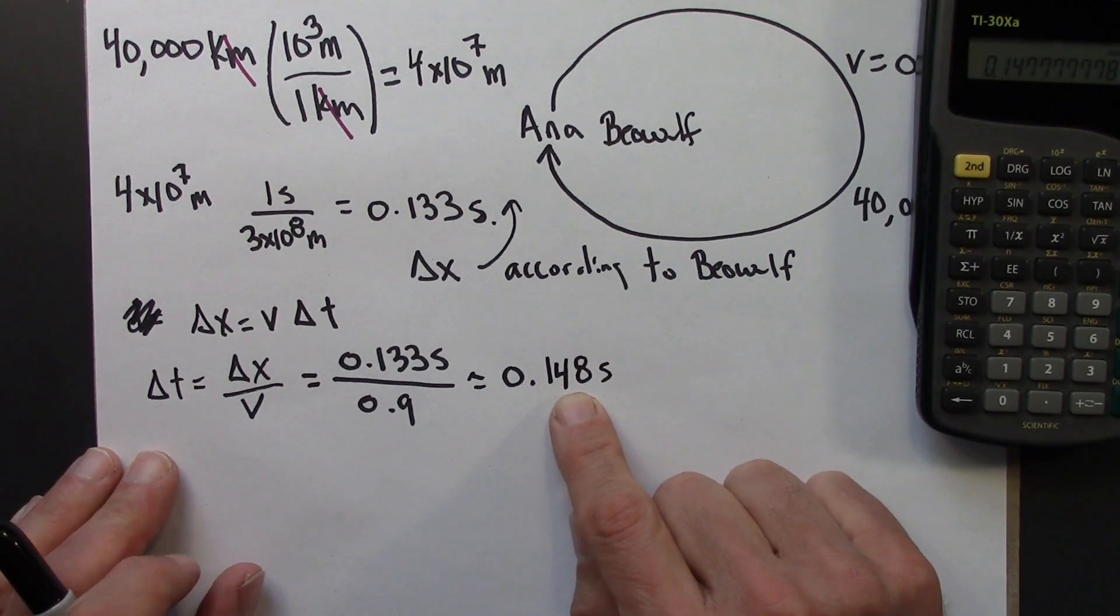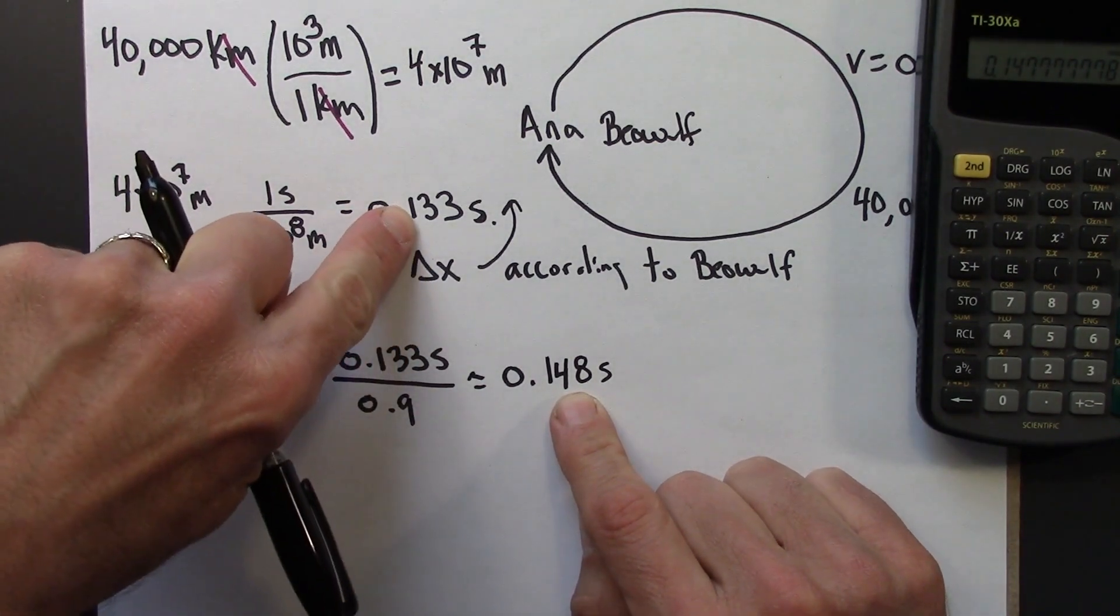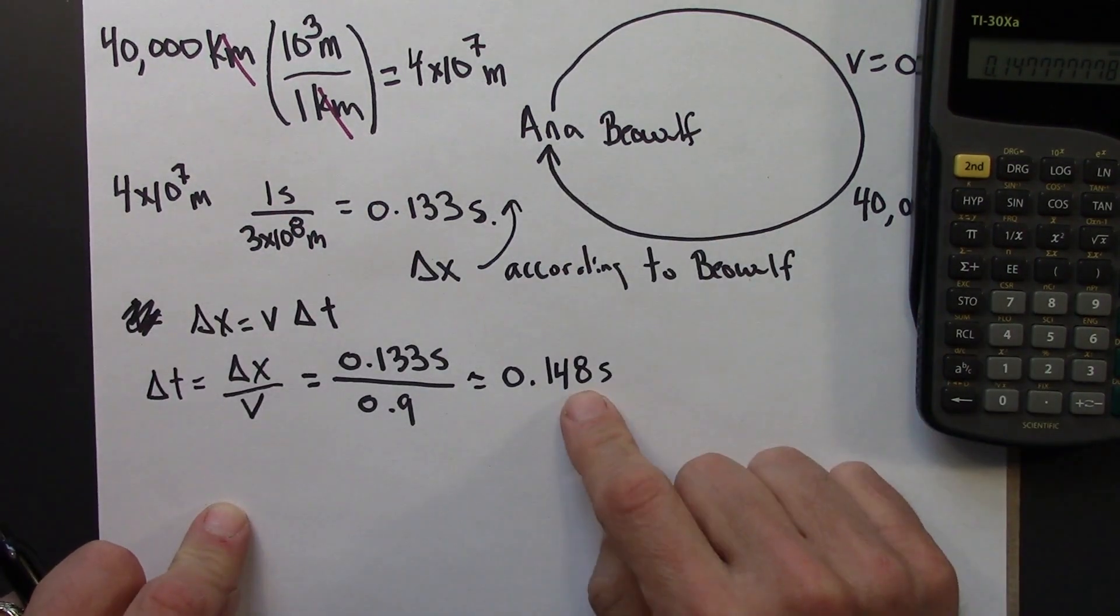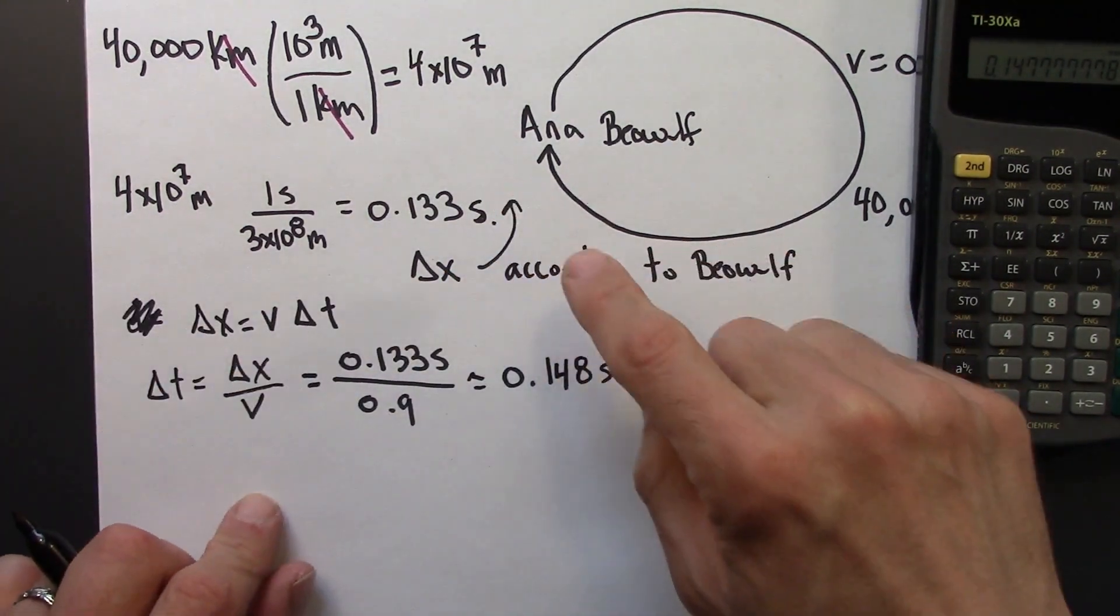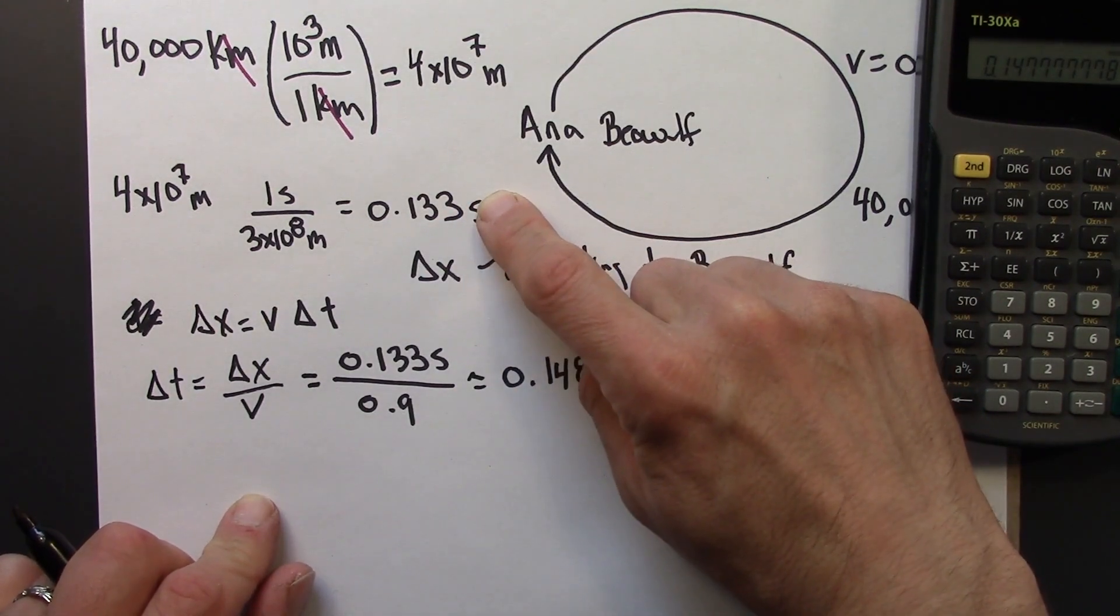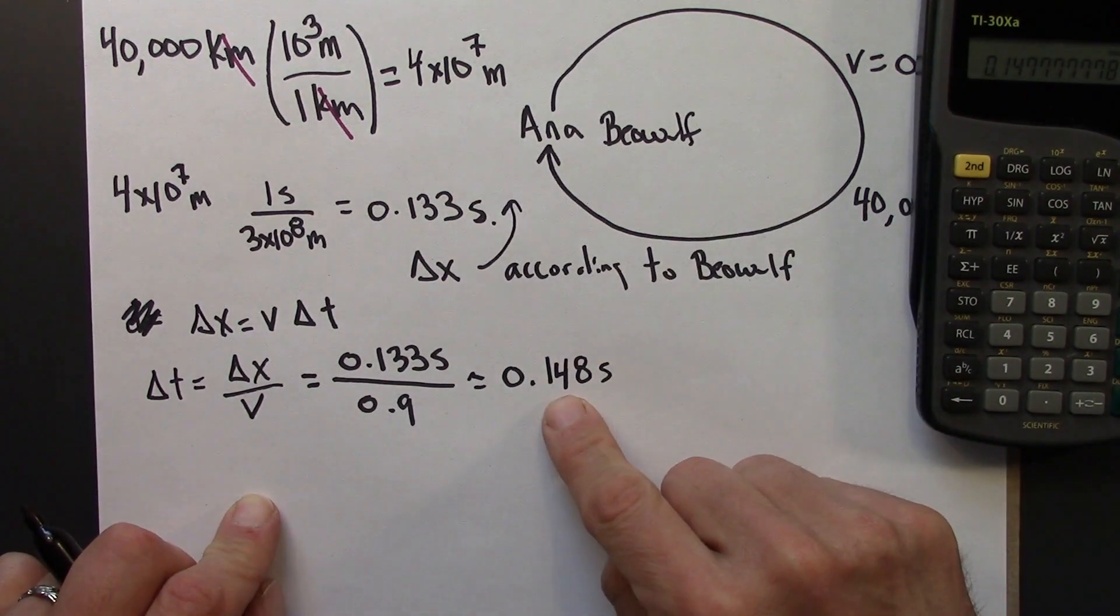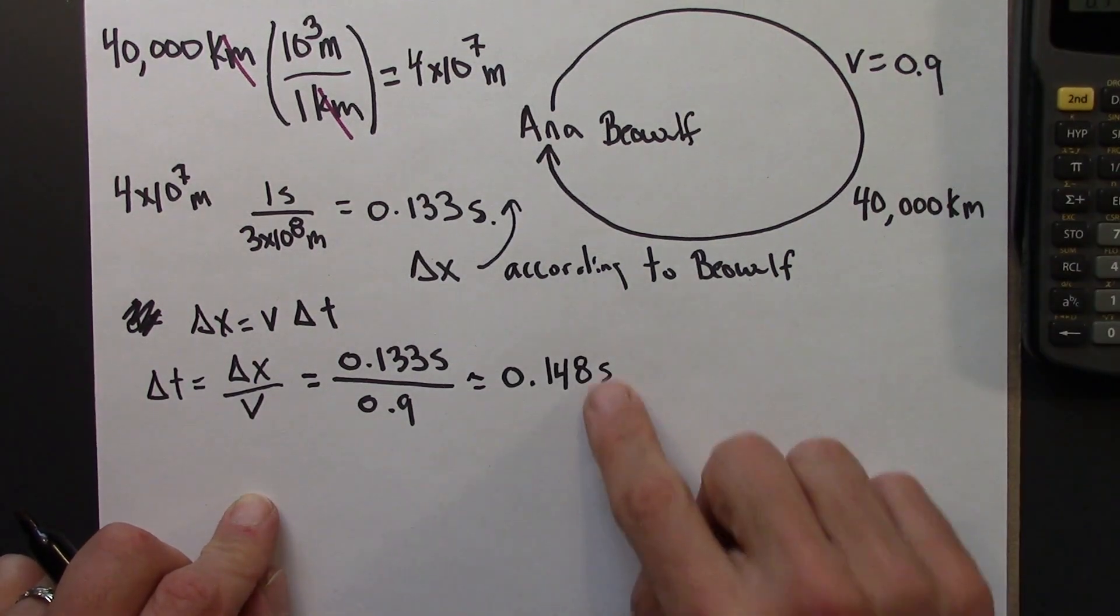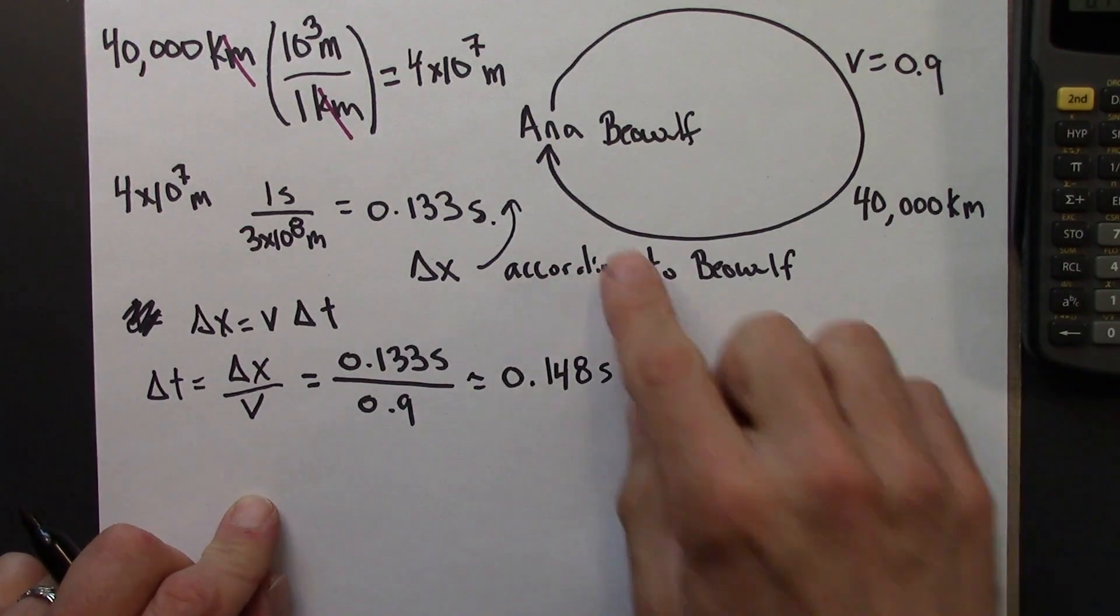Notice that the time is a little bit larger than the distance, and that makes sense. Ana is traveling a little slower than the speed of light. If she was traveling at the speed of light, which would be impossible, she would travel 0.133 seconds of distance in 0.133 seconds of time. She's slower, so it takes her a little longer to travel that distance. So that's the time interval according to Beowulf.